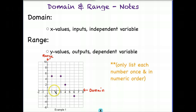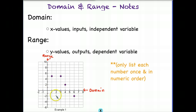Depending upon how long we run, we end up going further. So domain is typically your input — what you put in — in order to find your output, what you're getting out. Now if we look at the dots on this graph, we can actually pull the domain and the range from those.